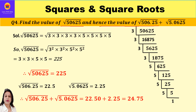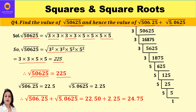Fourth question: find the value of √50625, and hence find √506.25 + √5.0625. Starting with √50625 by prime factorization: the factors are 3² × 3² × 5² × 5². Taking one factor from each pair gives 3 × 3 × 5 × 5 = 225. So √50625 = 225.